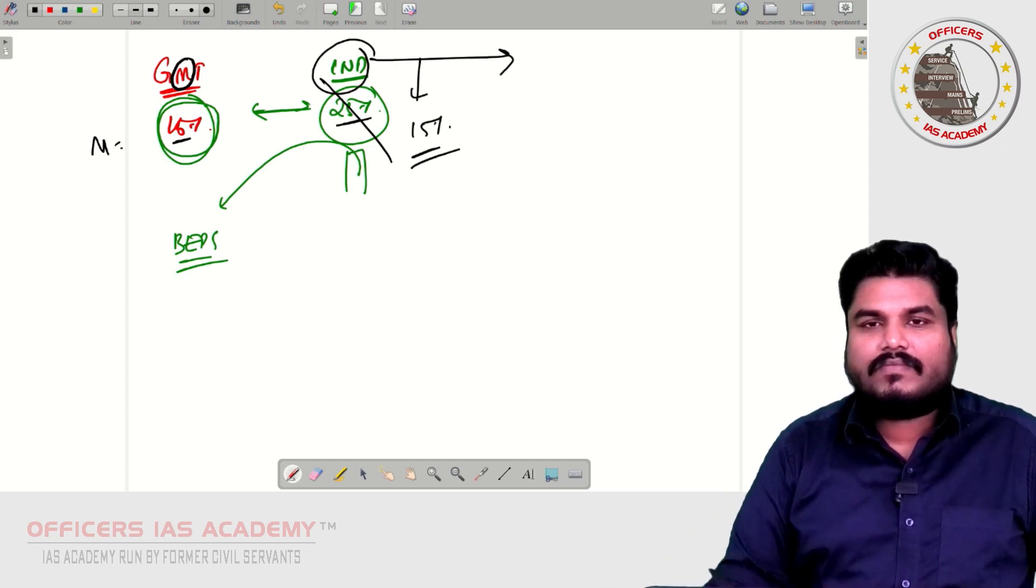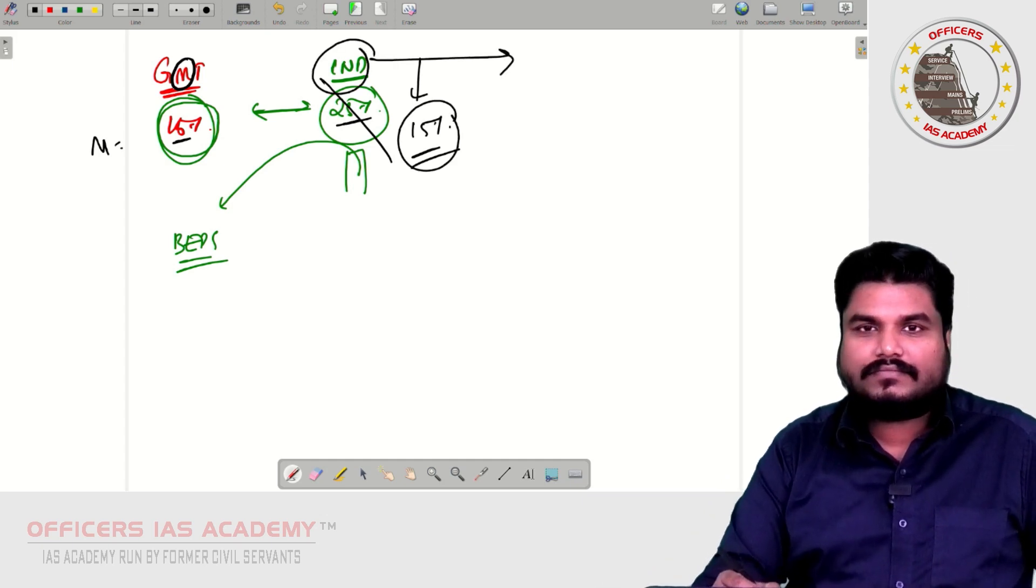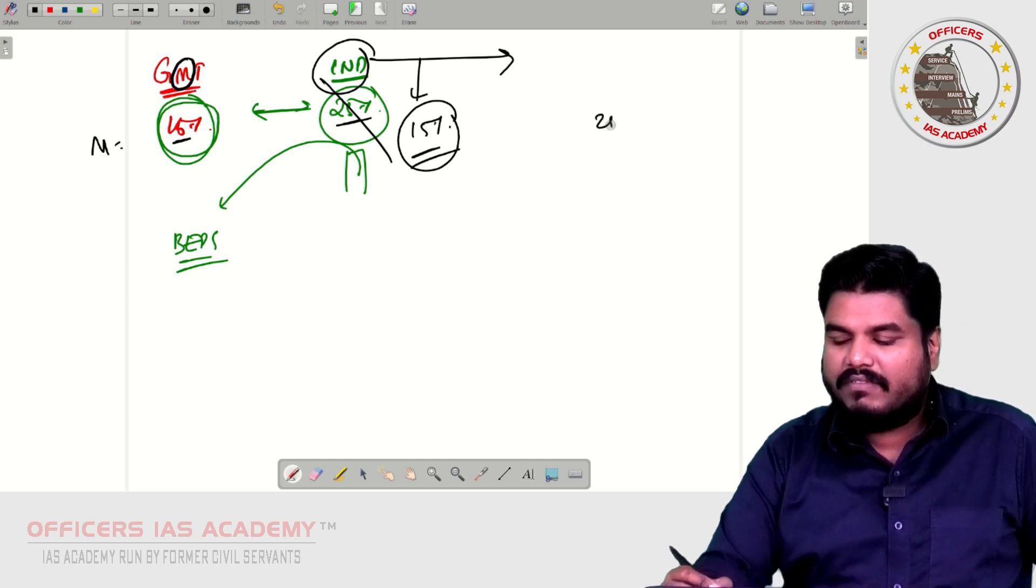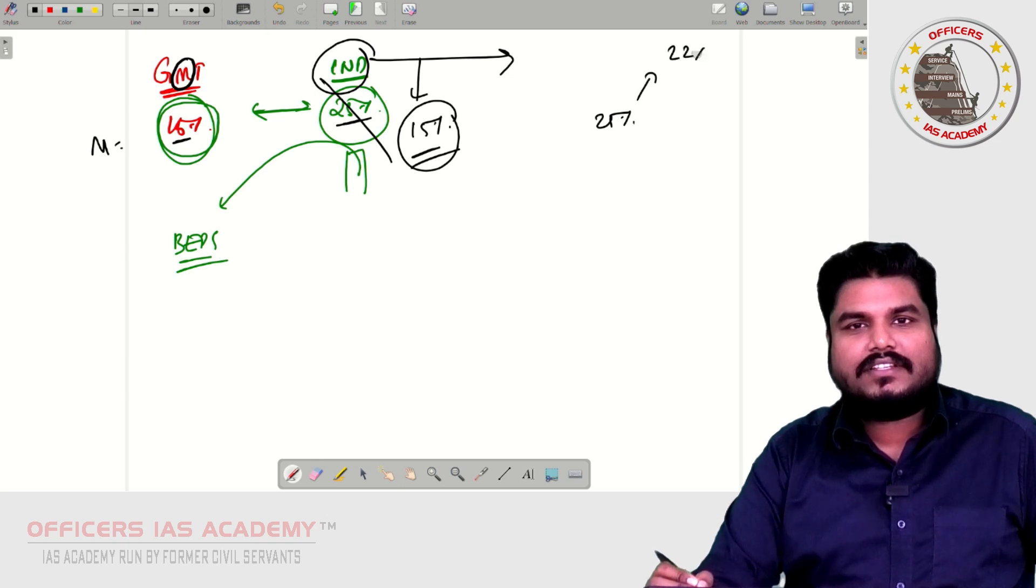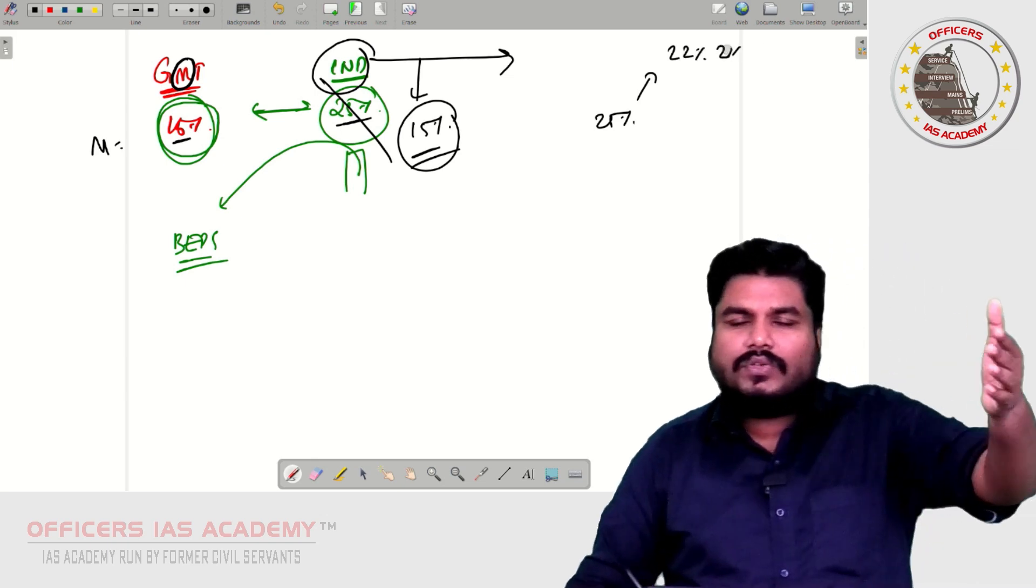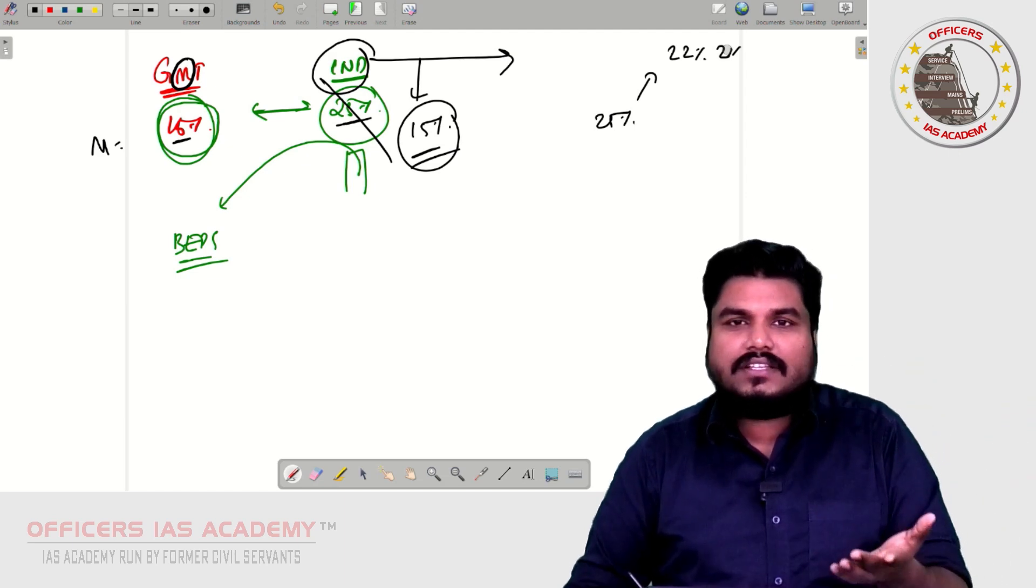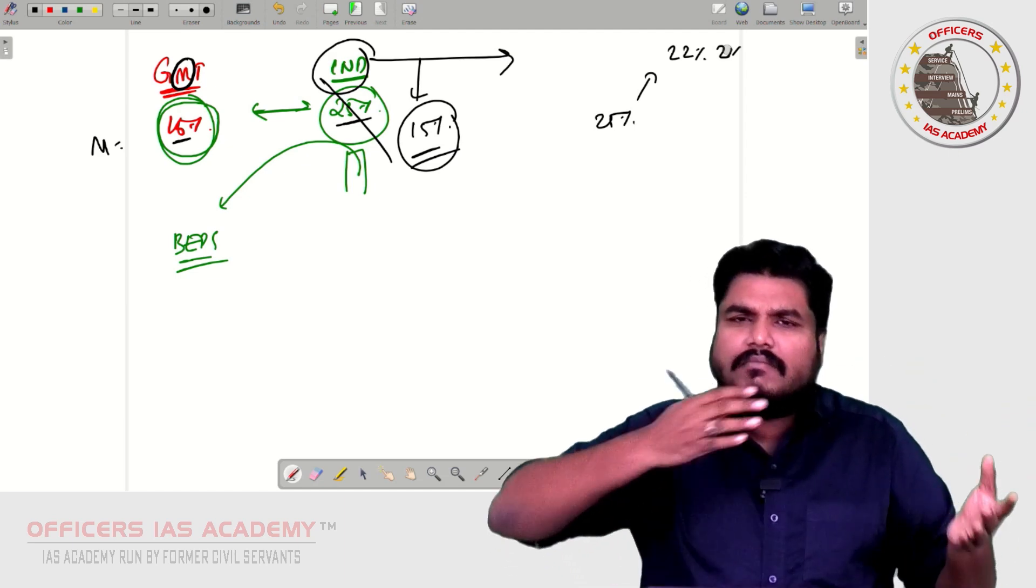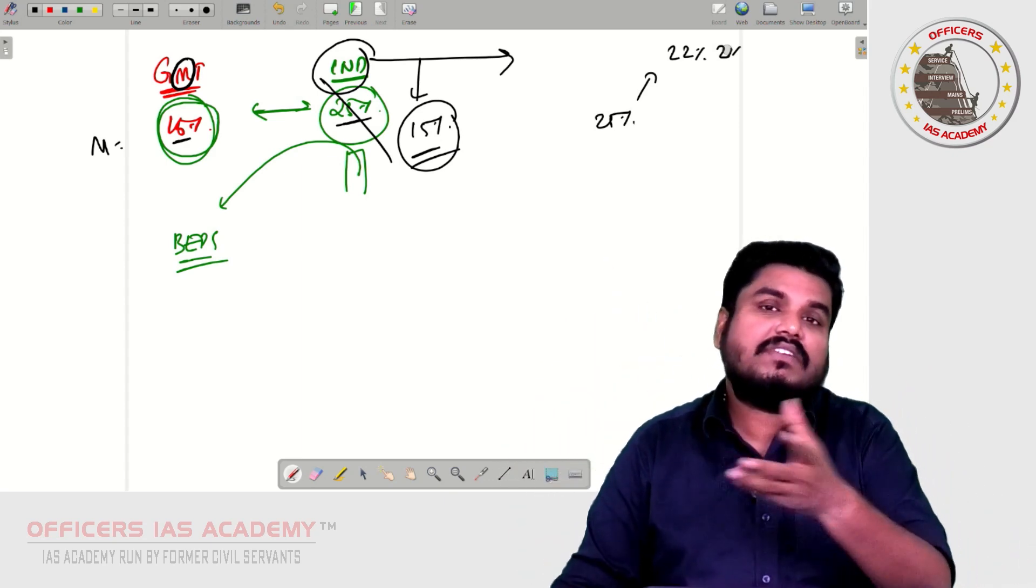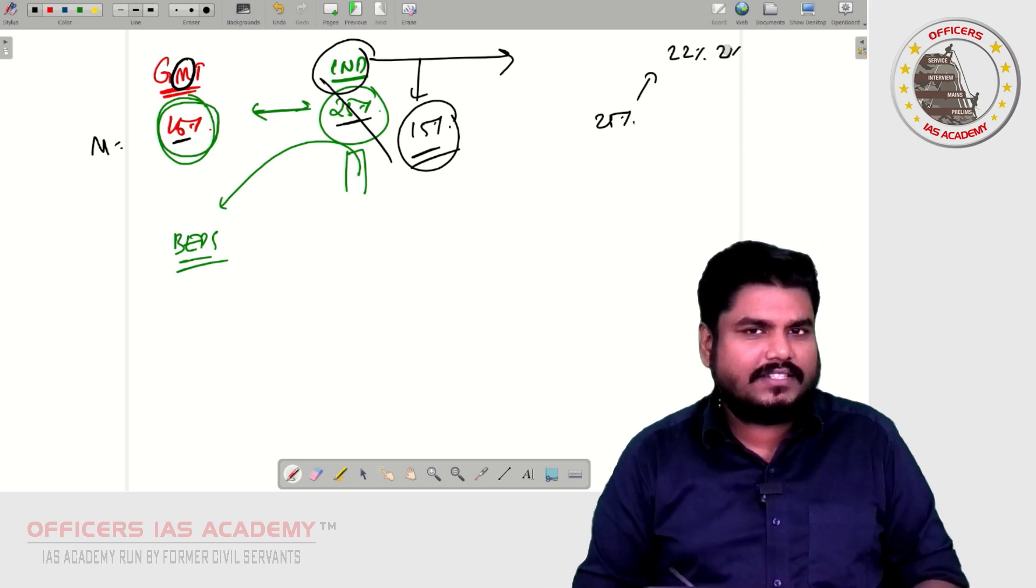So what India proposed is, see, 15% is very low, right? We will also compromise. From 25%, we will come to around 22% or 21%. We will also compromise. You also don't see 15% as your minimum corporate tax. Bring it to 20, 21, 22. We can find some common point so that it benefits everyone. That is India's stand.